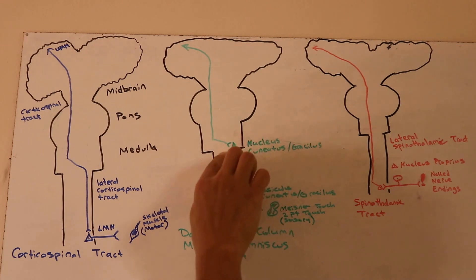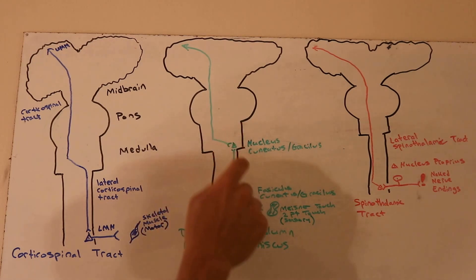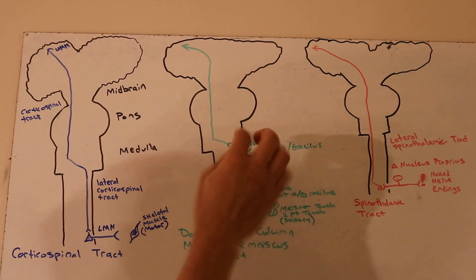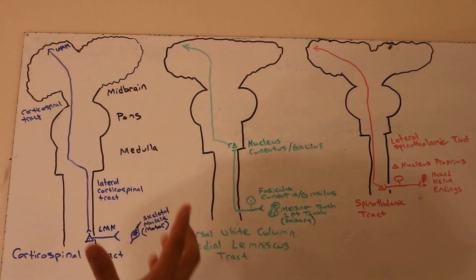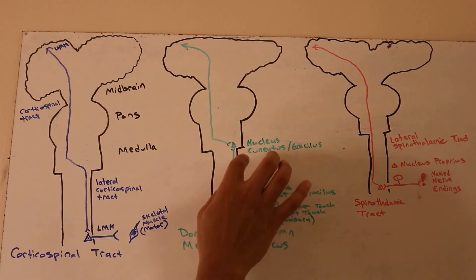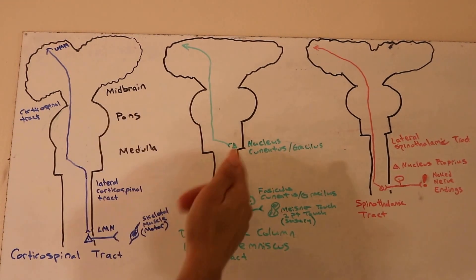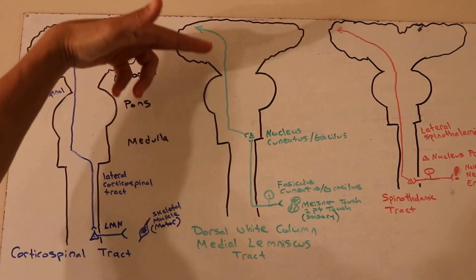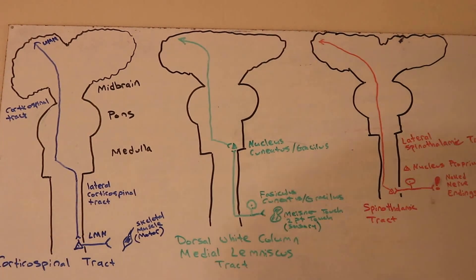The touch sensation travels up these tracts and hits its nucleus — either nucleus cuneatus or nucleus gracilis — located in the medulla. A nucleus is a collection of axonal cell bodies with similar functions. Once the signal communicates with its nucleus in the medulla, it decussates somewhere in the medulla, then travels on the opposite side up to the thalamus for crude touch signaling, and more specifically to the cortex for fine touch signaling.